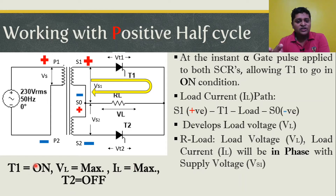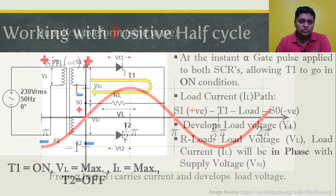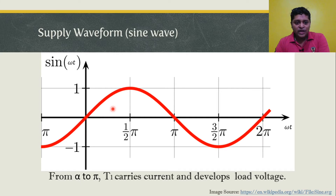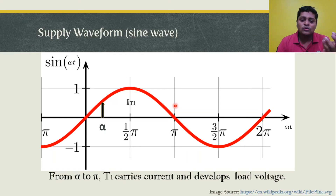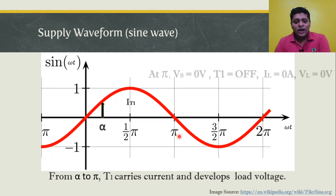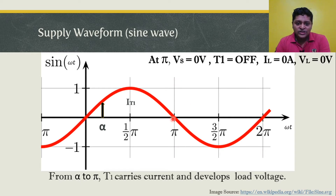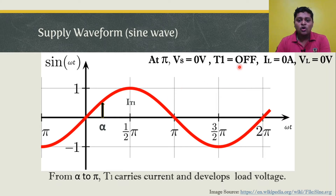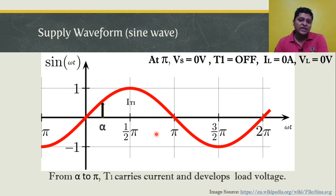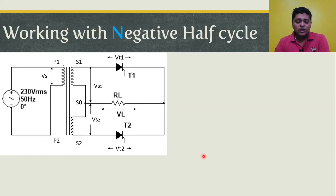In this positive half cycle, T1 is on, T2 remains off, load current is established, and load voltage is developed. Looking at the waveform: as soon as the gate pulse is applied at alpha, T1 goes on and produces load current and load voltage in phase with supply. At the instant π, the supply voltage reaches zero, reducing the current through the SCR below the holding current value, forcing T1 to turn off. Load current and load voltage then become zero. T1 carries current from alpha to π.